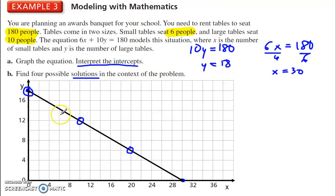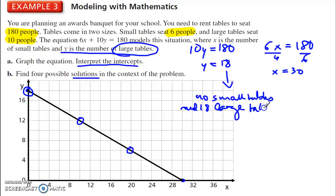What do the intercepts mean? Interpret the intercepts. Y equals 18 means that y is the number of large tables. So, we could use zero, no small tables, and 18 large tables. X equals 30 means no large tables and 30 small tables.